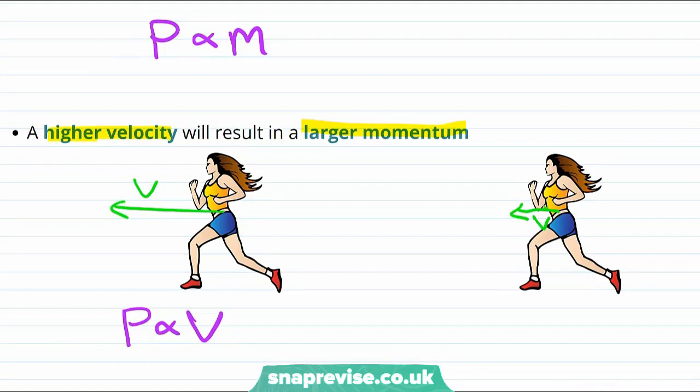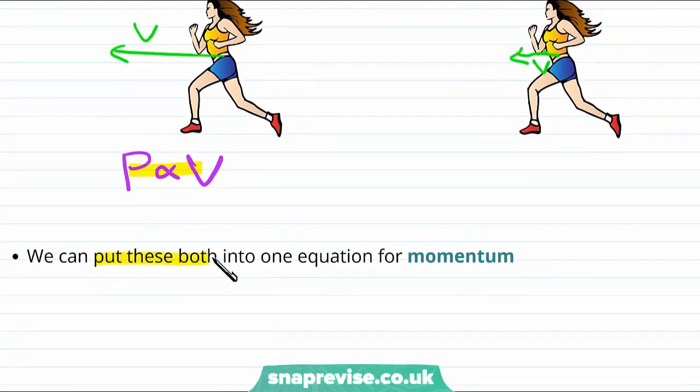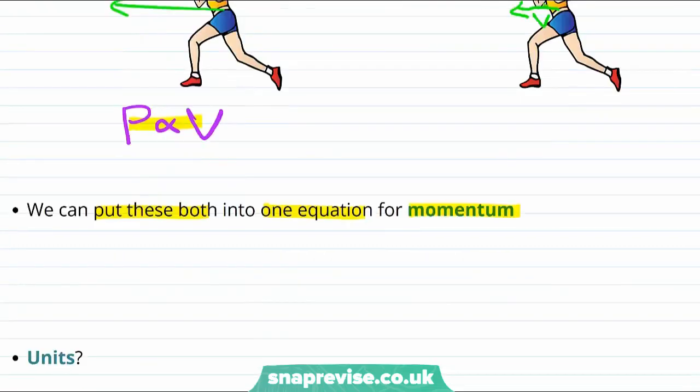Now we have two proportionality rules here. And it turns out we can put both of these proportionality rules into one equation for the momentum. We say that the momentum is equal to the mass multiplied by the velocity.